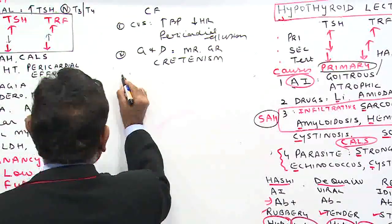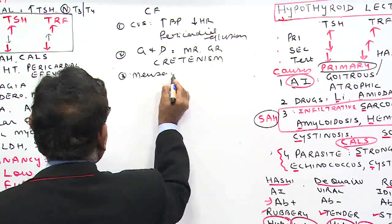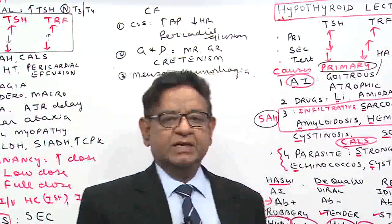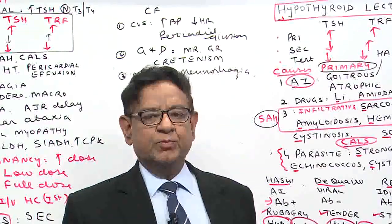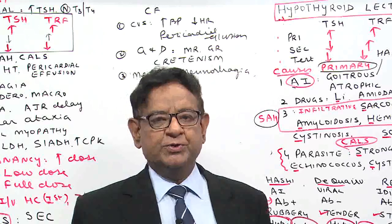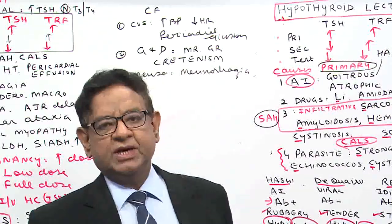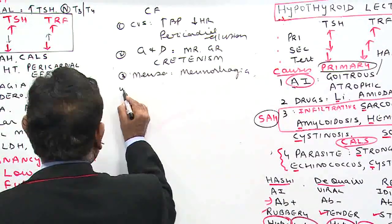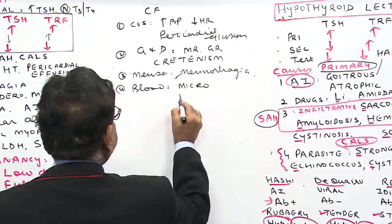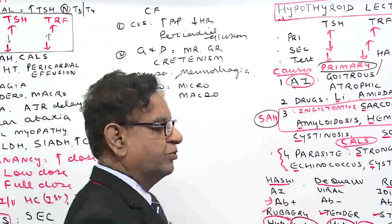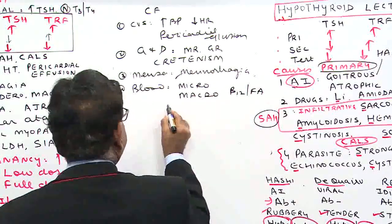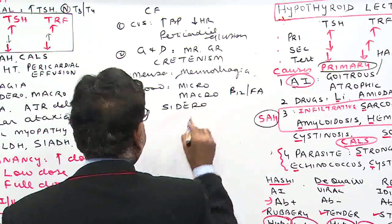Regarding menstruation — hypothyroid causes menorrhagia, meaning excess bleeding. A patient might present to the gynae OPD with menstrual dysfunction, so before any treatment is planned for DUB, thyroid function should always be done to rule out hypothyroid. In the blood, classically the patient may have microcytic anemia due to menorrhagia, macrocytic anemia because this is an autoimmune disorder with possible B12 or folic acid deficiency, and sideroblastic anemia is also a feature.